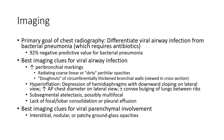Viewed in cross-section: hyperinflation, with flattening of the hemidiaphragms and distribution of the hemidiaphragms appearing downward-bowing on lateral view, and increased AP chest diameter. On lateral view, there is gradual or mildly convex bowing of the lung between the ribs. Subsegmental atelectasis, possibly micropulmonary, with lack of pulmonary lobar consolidation or pleural effusion. Best imaging clues for viral parenchymal involvement in the tertiary: mosaic attenuation or patchy ground-glass opacity.